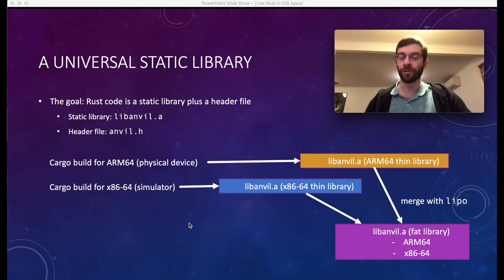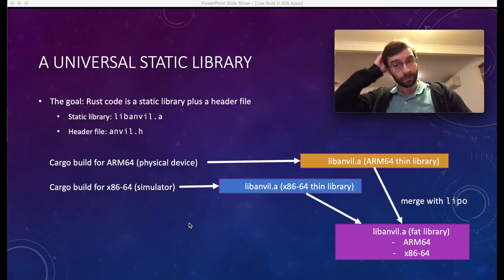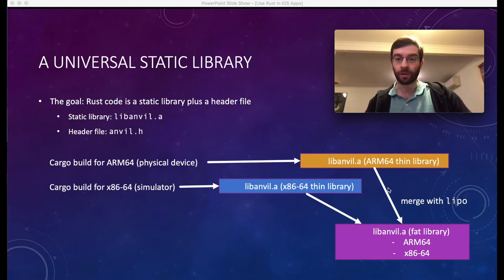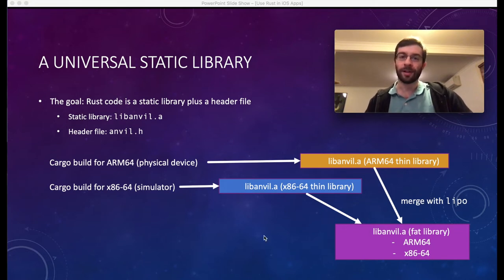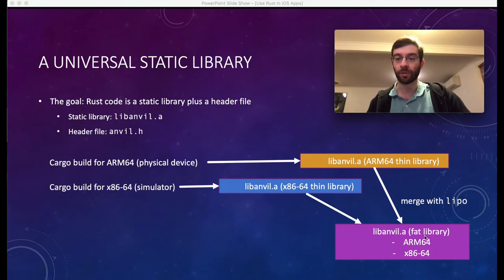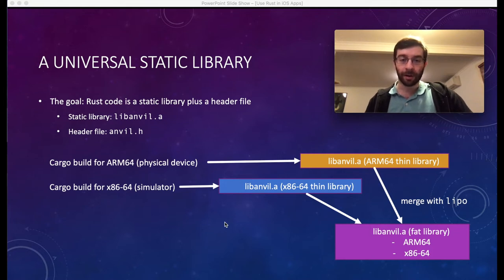That will produce two different files called libanvil.a in different parts of the target sub-directory. To make this easier to handle, we're going to merge them into a single library called libanvil.a. When it contains multiple architectures like this, they call it a fat library — that's why the tool's called lipo. This is terrible. I blame Apple.